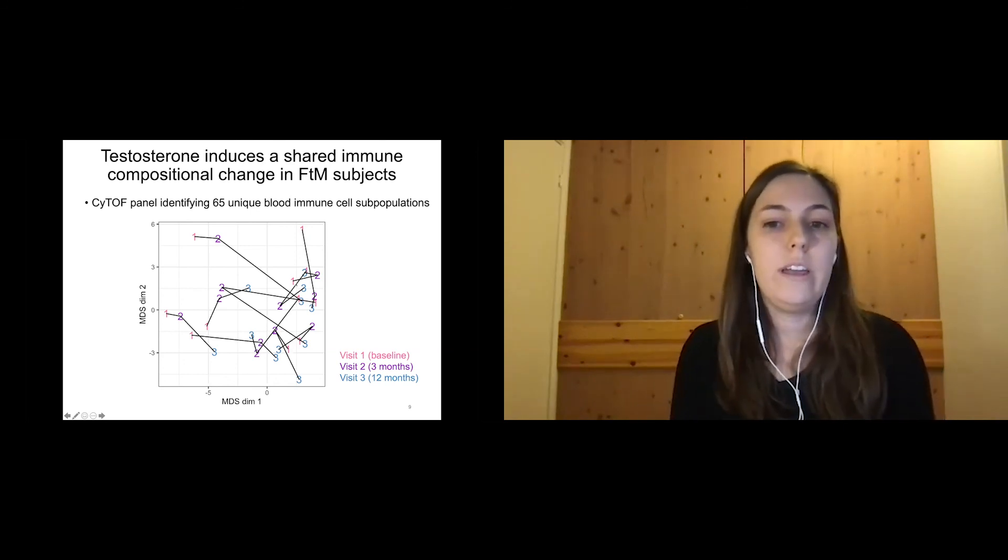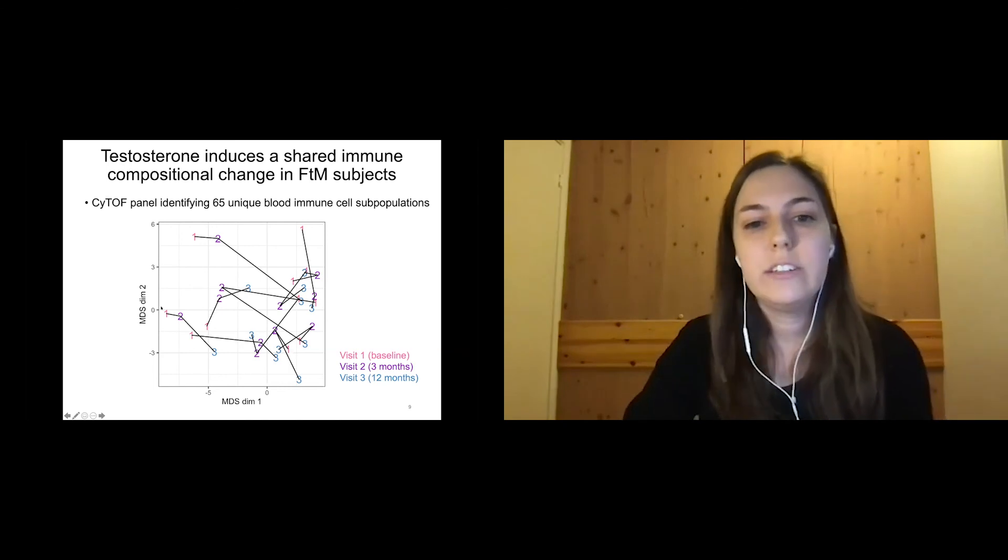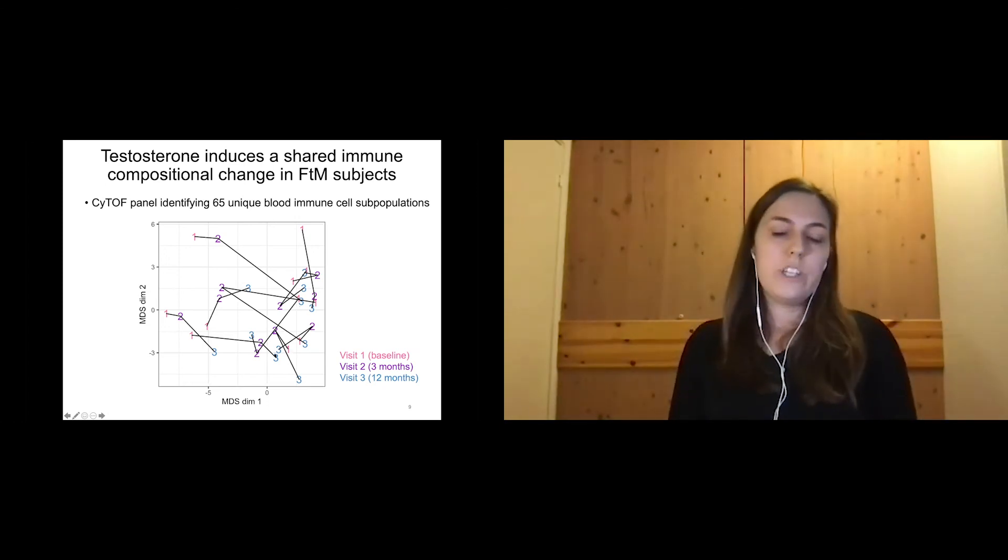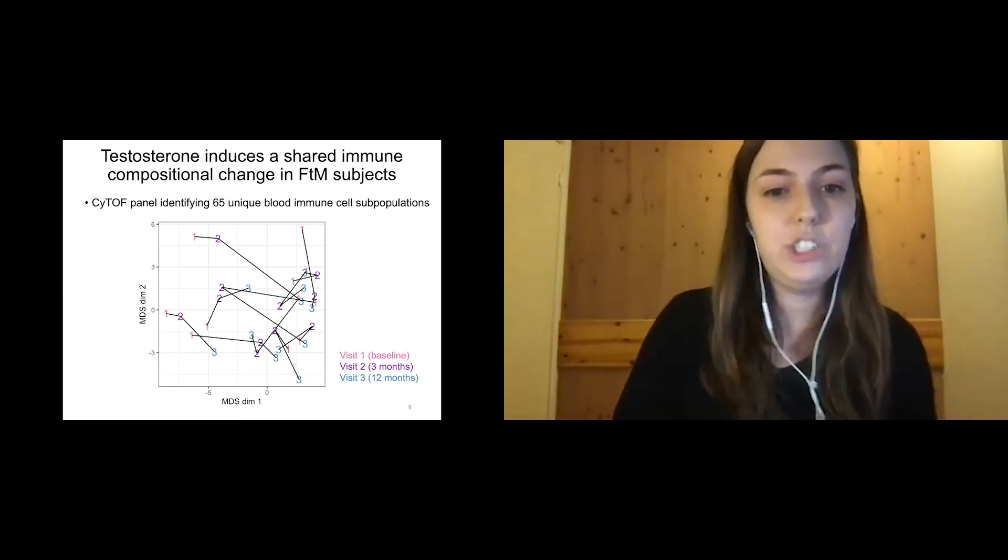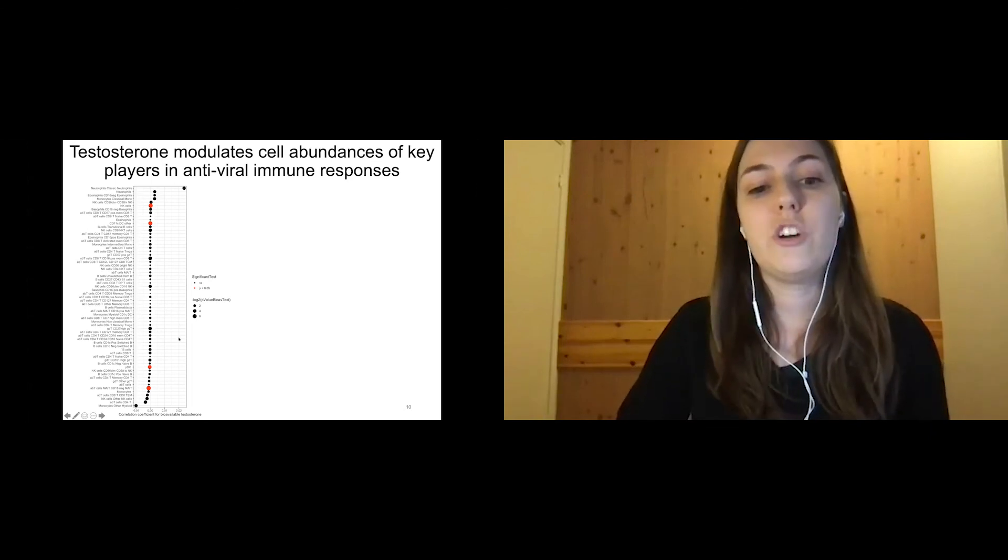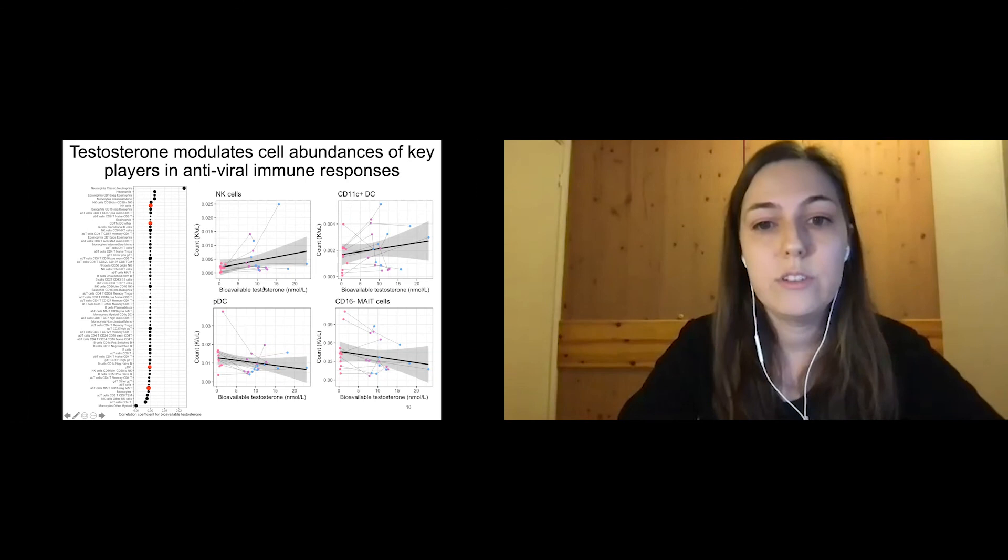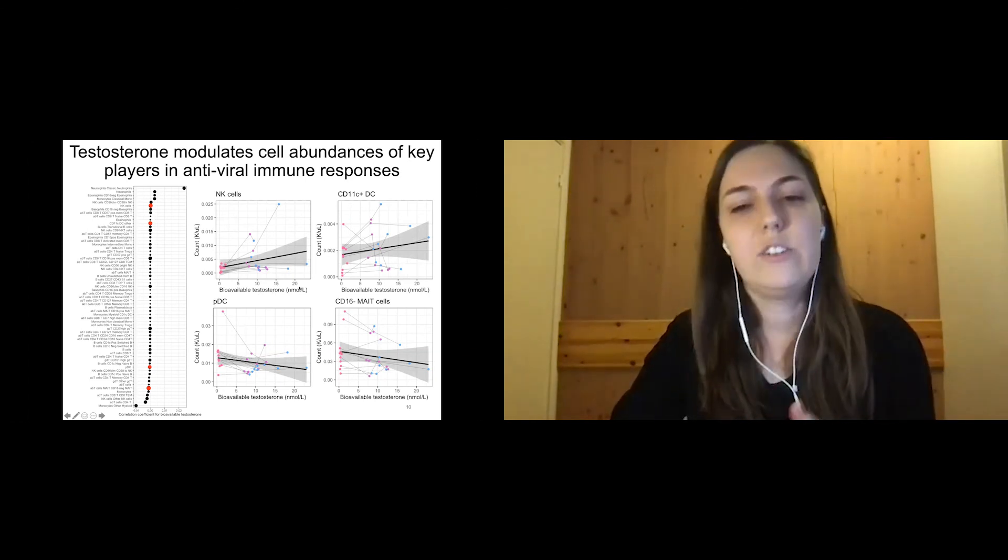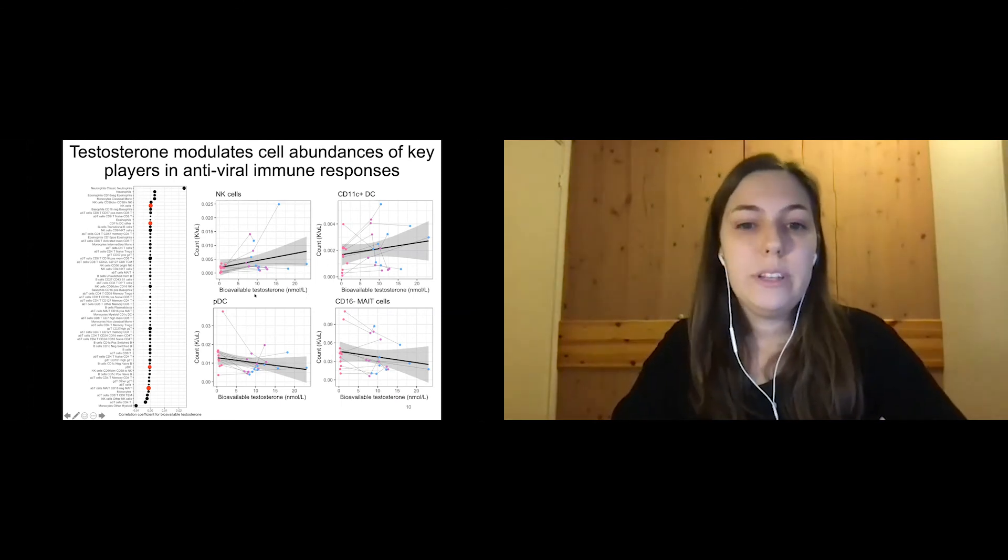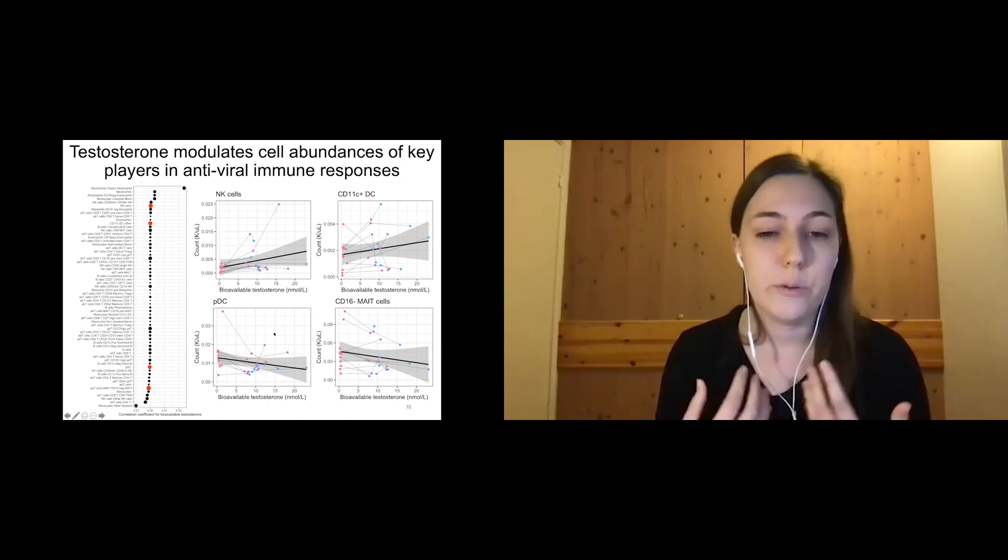We can first of all observe that there's great inter-individual variability, which is expected, especially in humans. But what's really interesting here is that there's this shared change over time over the course of hormone treatment that these subjects are experiencing. The question now becomes, what could be these cell types that are changing over the testosterone treatment? We looked at the 65 different populations in terms of how they correlated with bioavailable testosterone levels. We observed four major populations that were changing. As bioavailable testosterone levels increased, NK cell counts and CD11c+ DC counts were increasing, whereas pDCs and mast cells were decreasing their counts over time.